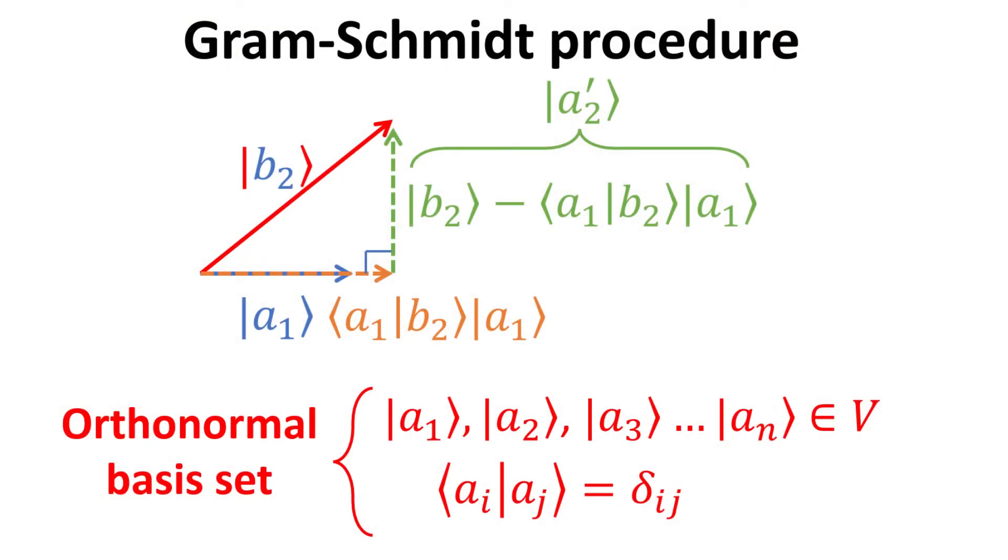In quantum mechanics, it is very useful to have an orthonormal basis set. Every basis vector is orthogonal with each other, which means that the inner product with a basis vector not of itself is zero. In addition, the norm of each basis vector is one.